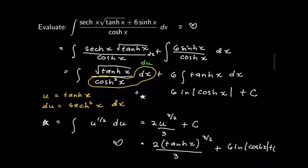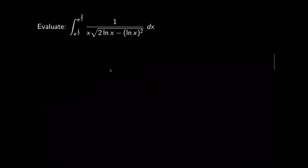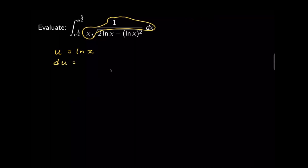For the final answer, combining both terms: (tanh x)^(3/2) over (3/2) plus 6 ln of cosh x plus c. Technically the two constants c1 and c2 are different, but adding two constants gives another constant. Next, let us evaluate the definite integral. A good candidate for u here is ln x, because we already have 1 over x dx waiting in the integrand. So let u equal ln x, and du equals 1 over x dx.